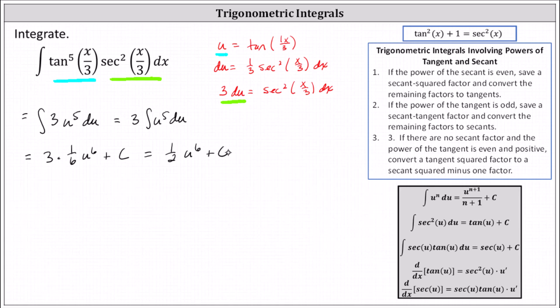The final step is to replace u with tangent of x divided by 3. The final antiderivative is one half times the sixth power of tangent of x divided by 3 plus c. I hope you found this helpful.